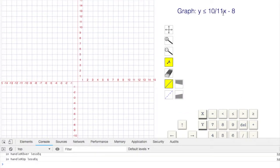y is less than 10 elevenths x minus 8. The negative 8 is going to be right here. And the slope is 10 elevenths, so I'm going to move over 11. That's positive. The 10 is positive, so I'm going to go up 10. Up 10 from negative 8 brings me to 2 like that.